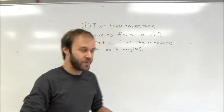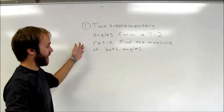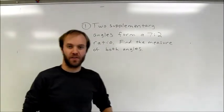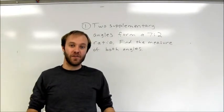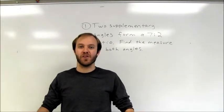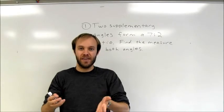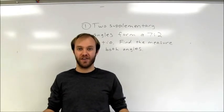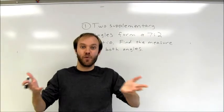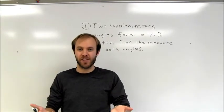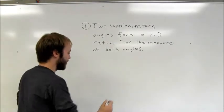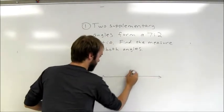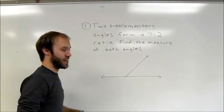Looking at the first example, the problem says that two supplementary angles form a 7 to 2 ratio, and we want to find the measure of both angles. The easiest way to do this is to put the two angles together. If you put supplementary angles together, they have a sum of 180 degrees, forming a straight angle. To help visualize this, we draw a straight angle formed by the two angles.